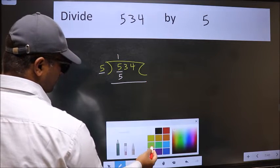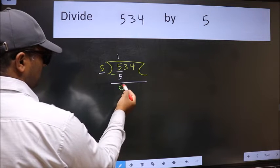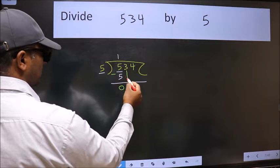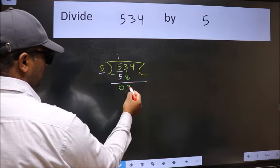Now we should subtract. We get 0. After this bring down the beside number. So 3 down.